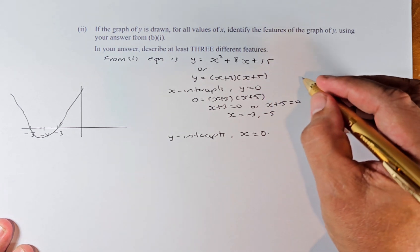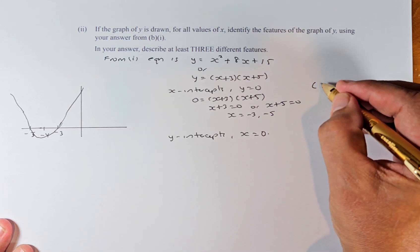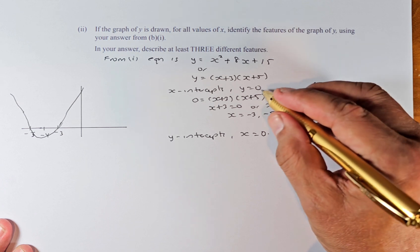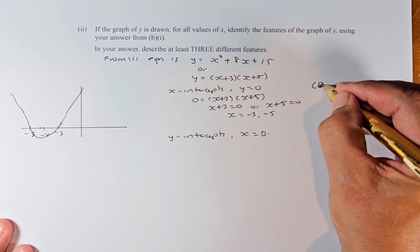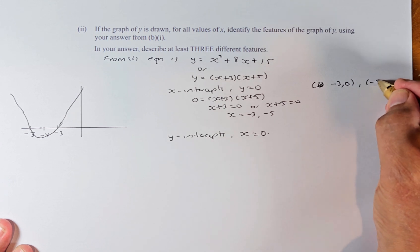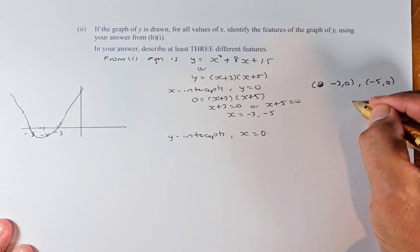So the X intercepts are the two points because Y is 0. So X is minus 3, 0. And the second point is going to be minus 5, 0. That is the first feature.